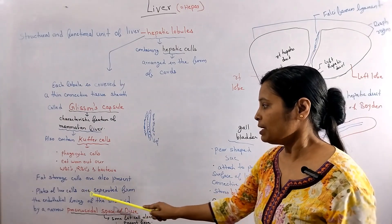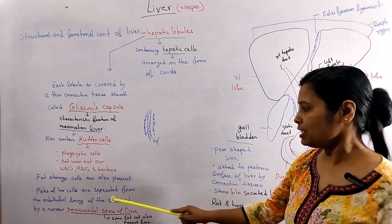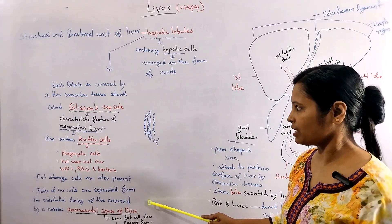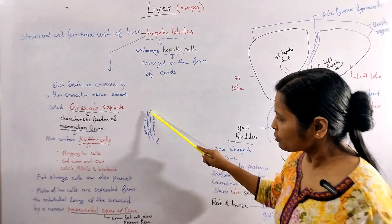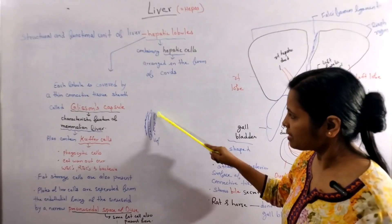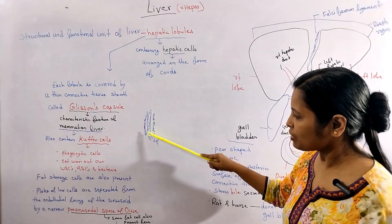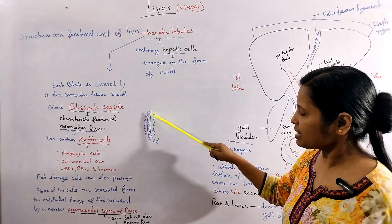The hepatic cells are separated from the endothelial lining of the sinusoids. These sinusoid cells are separated from the blood cells.